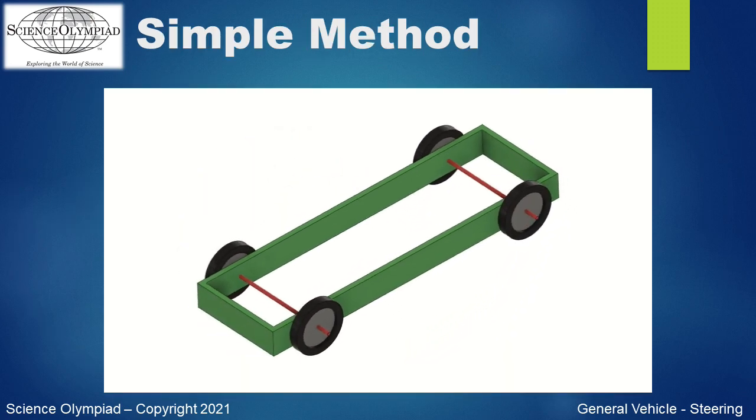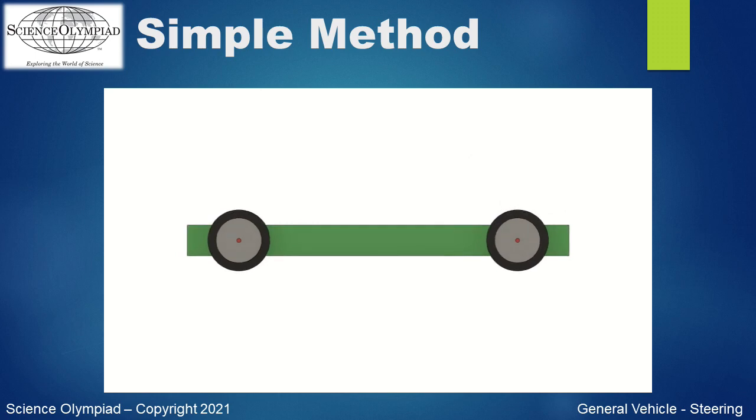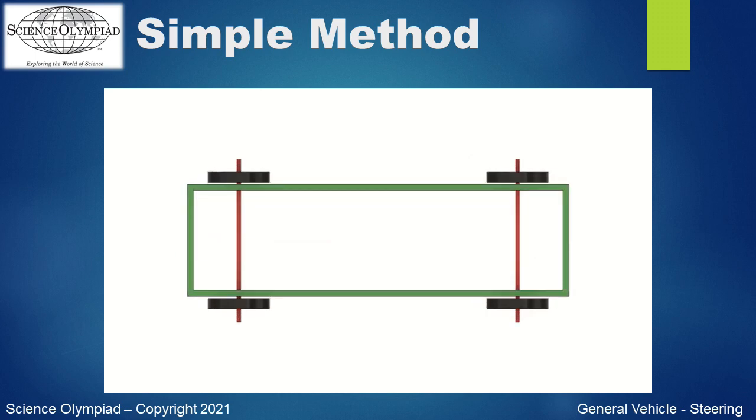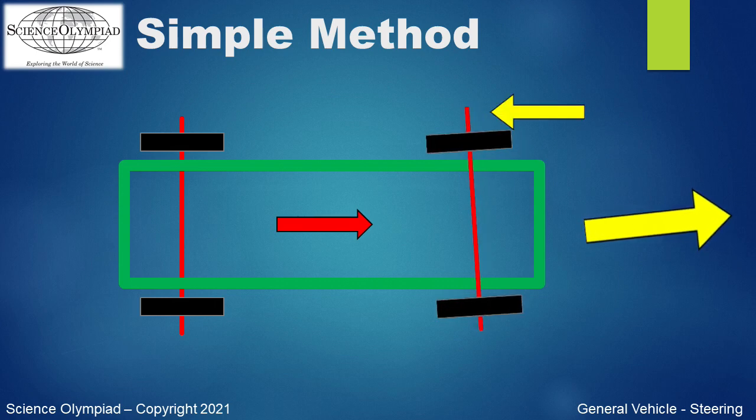Let's look at a different method that allows for slight steering adjustments. This vehicle has the typical two axles with two wheels per axle. For this method, three of the axle mounts are fixed and not movable. One of the axle mounts is movable. We will cover some construction ideas later in the video. The vehicle steering is controlled by moving this one mount either forward or backwards.